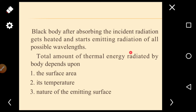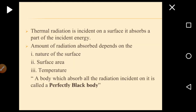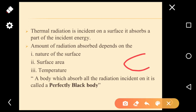A black body, after absorbing incident radiations, gets heated and starts emitting radiations of all possible wavelengths. The total amount of thermal energy radiated by a body depends on three things: the surface area, the temperature of the body, and the nature of the emitting surface. The amount of radiation absorbed by a surface also depends on the nature of the surface, surface area, and temperature.